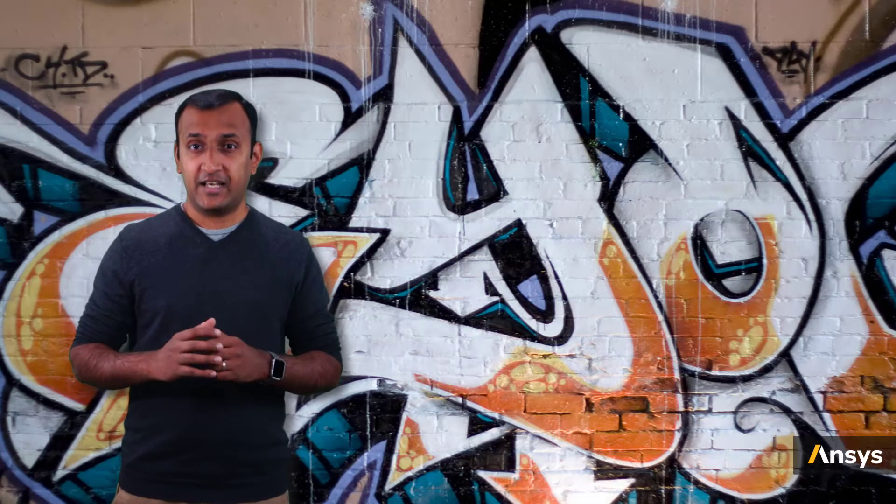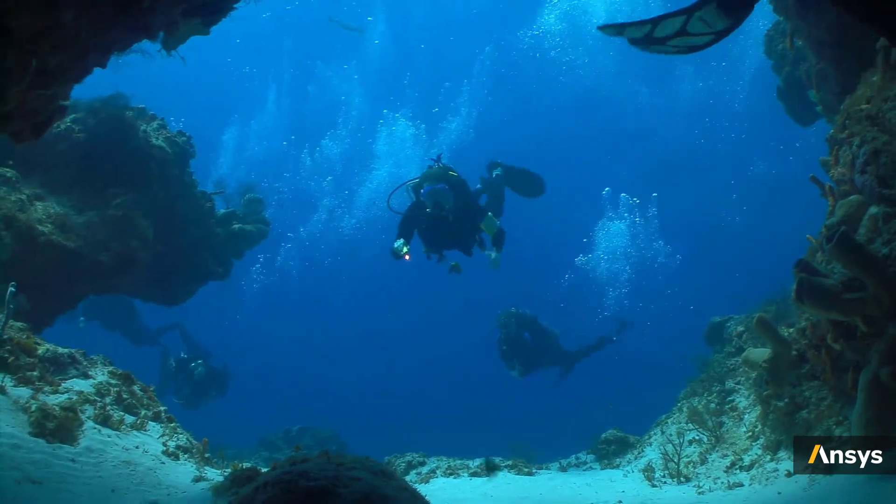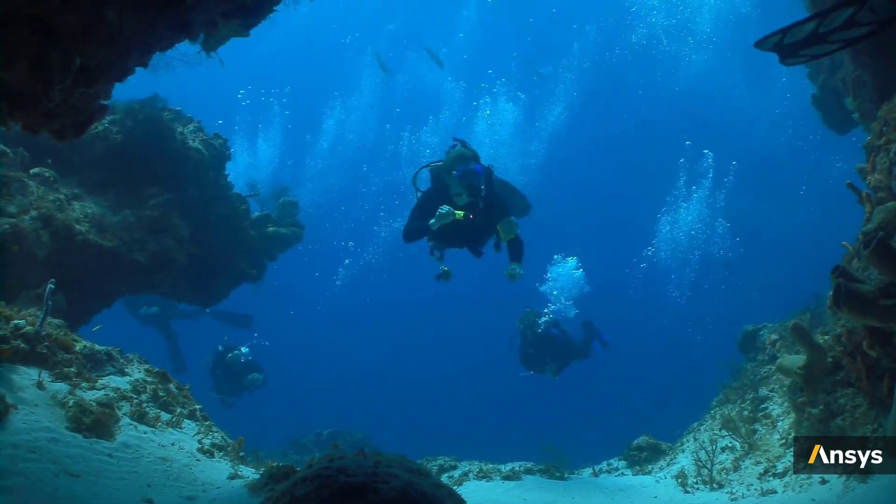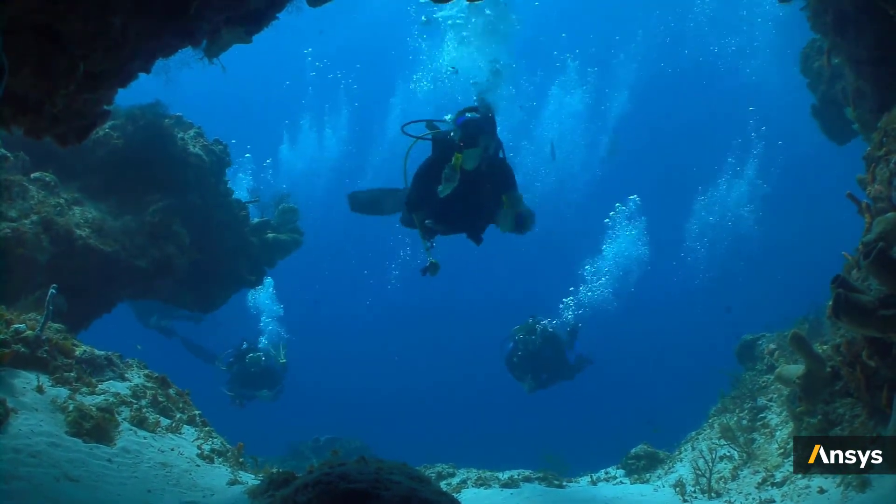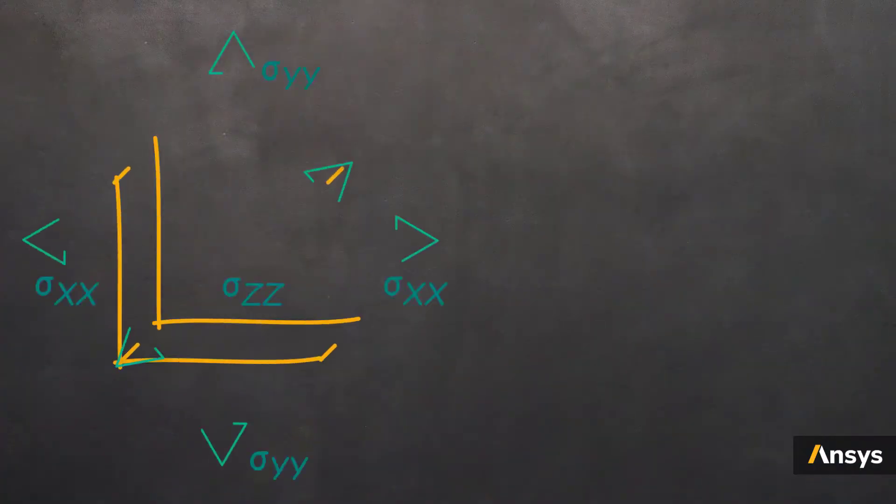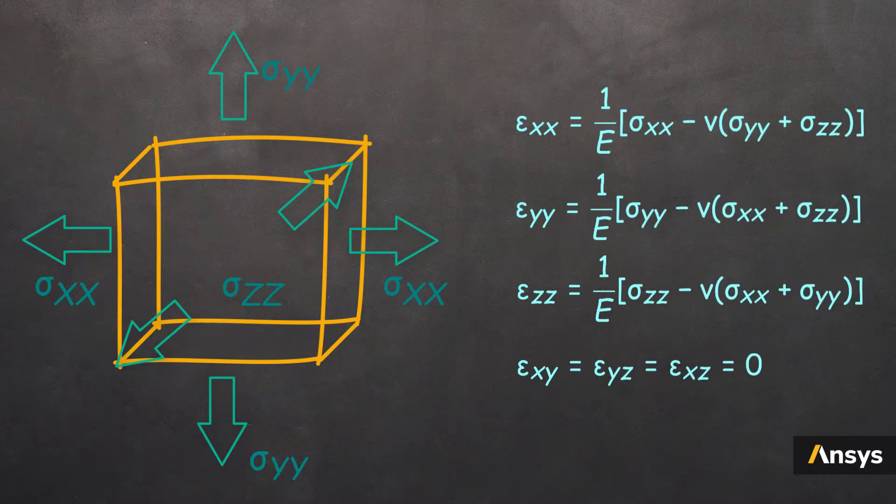Now, for the next case, let's look at a diver underwater. The diver experiences buoyant forces from all the directions. So, he experiences normal stresses in all three directions. The three normal strains due to this will take these forms, like in previous cases.